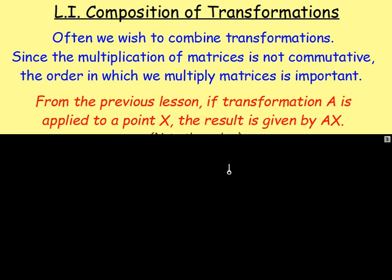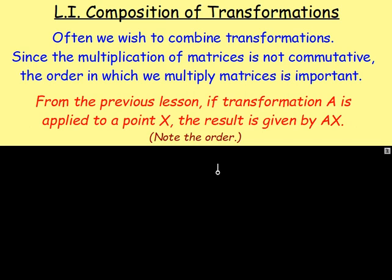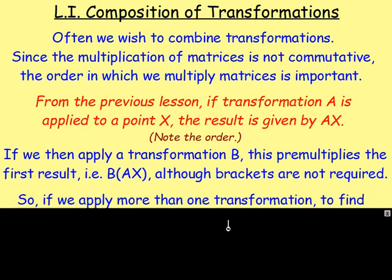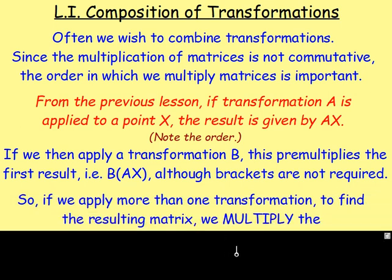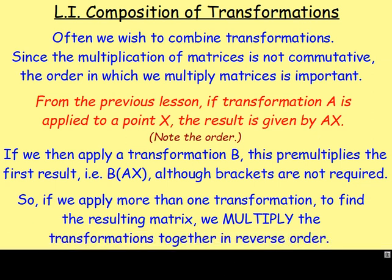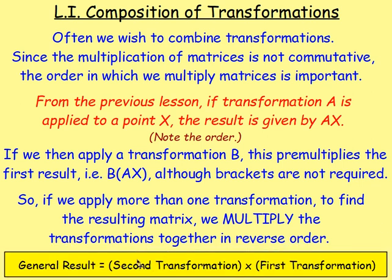From the previous lesson, if transformation A is applied to a point, the result is given by A (the transformation) multiplied by the point matrix. However, if we then apply another transformation B, it pre-multiplies — so it comes before the first result. You would have B times A times X. So, if you apply more than one transformation, to find the resulting matrix you multiply the transformations together, but in reverse order: you take your second transformation and multiply it by the first transformation.